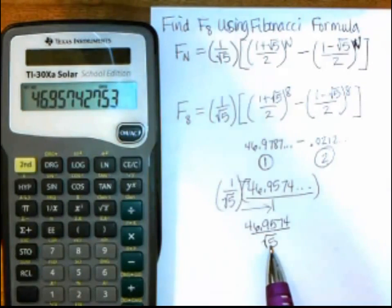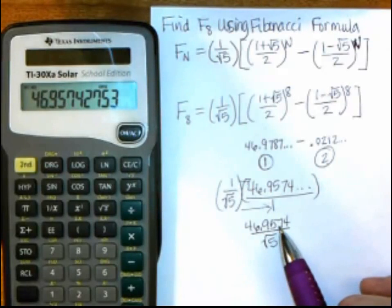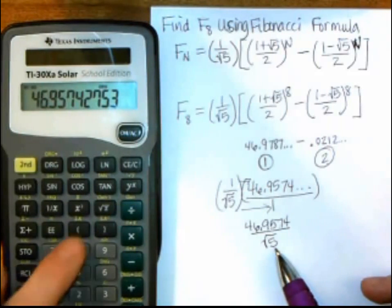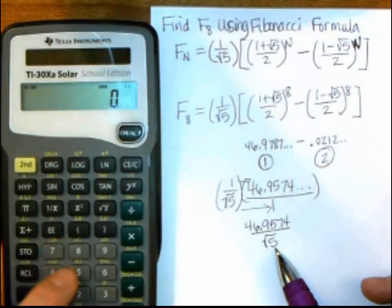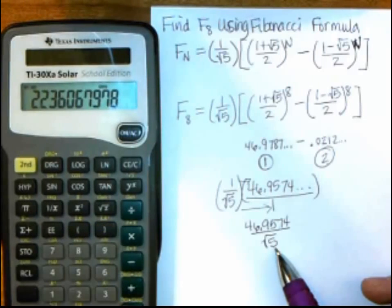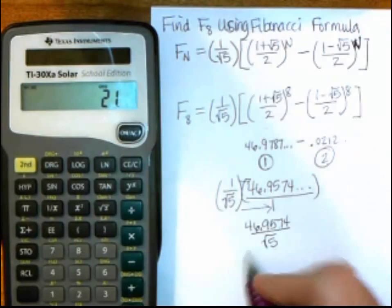So I'm going to take what I have on the calculator, divided by, and then I'll use parentheses to take care of that square root. So I put parentheses, 5, square root, end parentheses, and then equals, and I get 21.